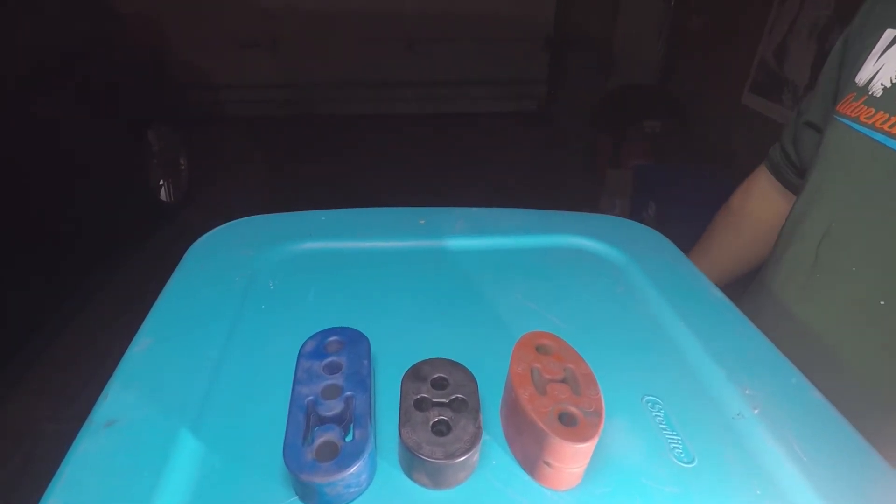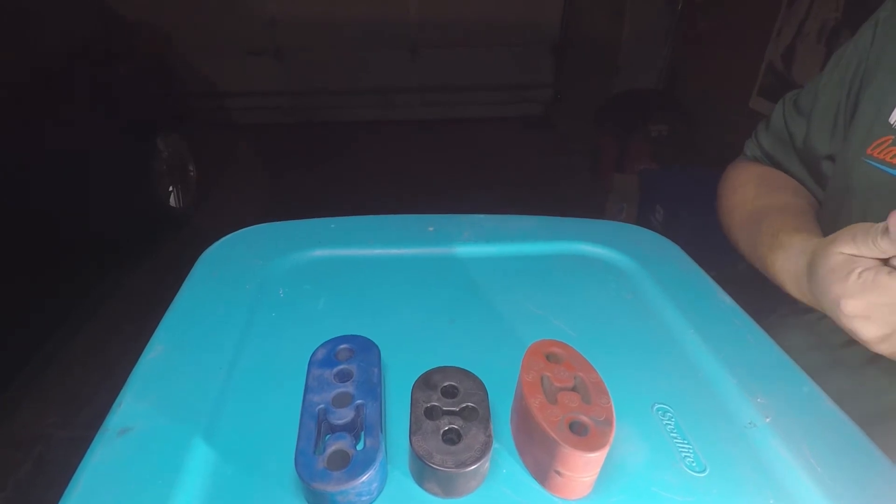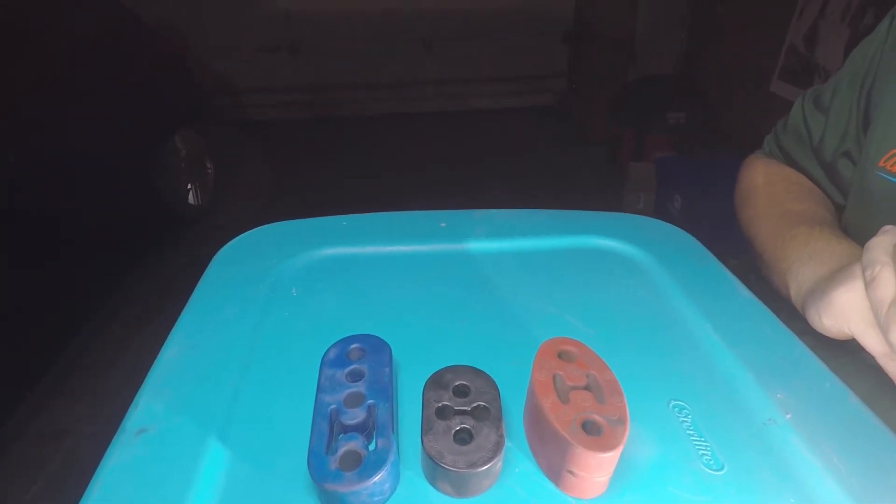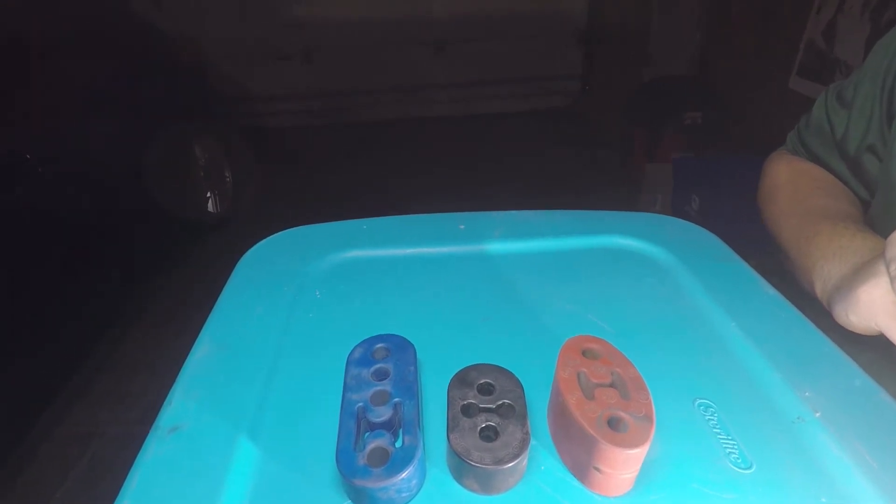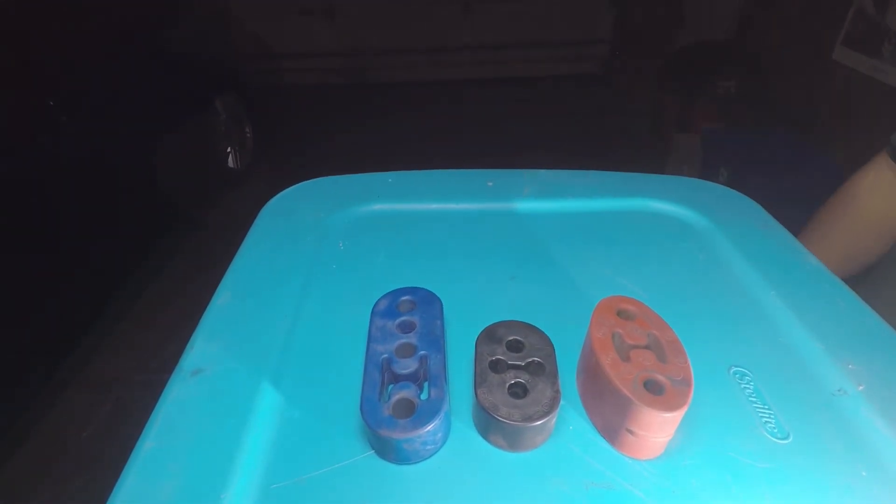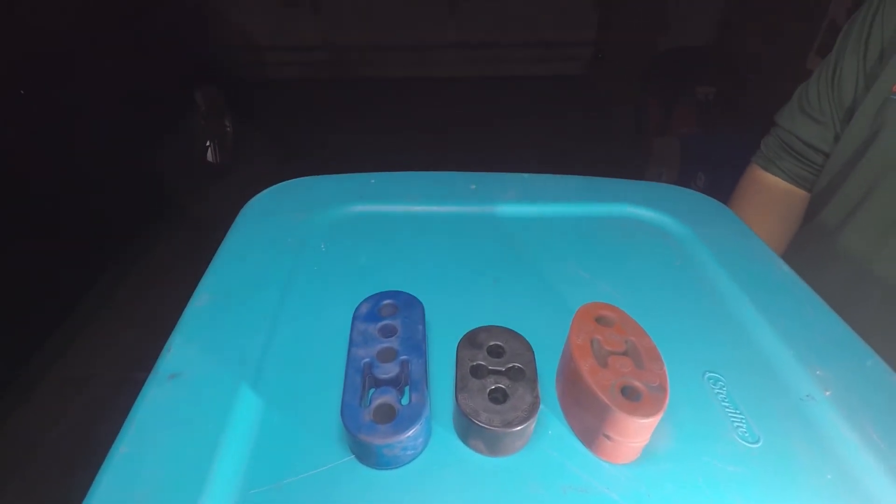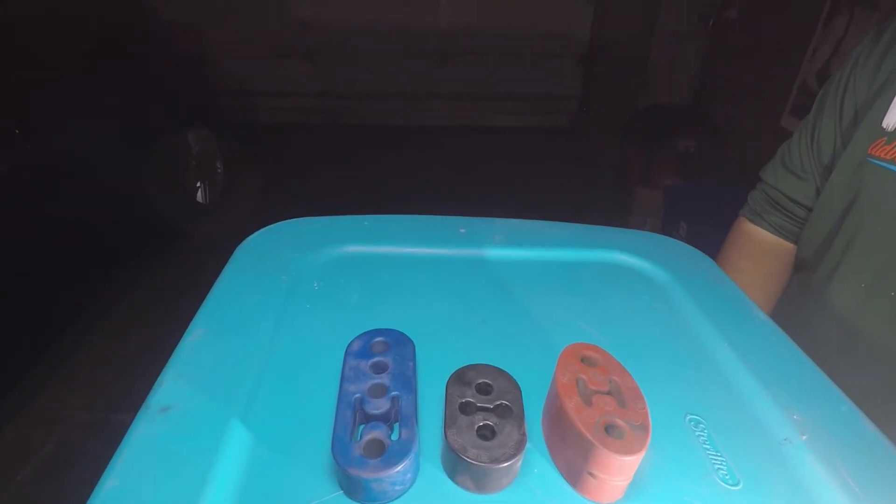The problem you run into with an aftermarket exhaust, especially these slip joint ones where there's no flanges, is that there's so much room to have them set up differently depending on how far you tighten down those clamps and how much you slip the exhaust into other pieces. When you're stuck with a clamp like the stock piece, you don't have any adjustability and it's very soft.